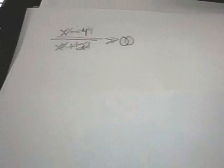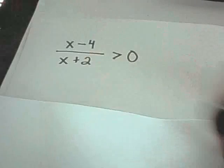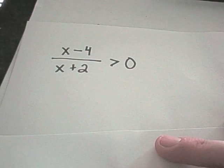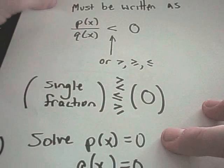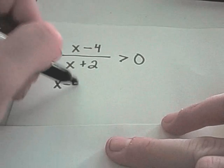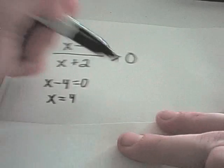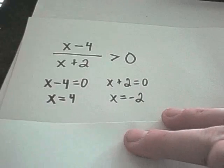Let's do the first example. Suppose we have the rational inequality (x − 4)/(x + 2) > 0. It's already in the good form with a single fraction, an inequality, and zero on the other side. We figure out what values make the top zero — setting the top equal to zero gives x = 4. Then we find what makes the bottom zero, which gives x = −2.